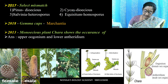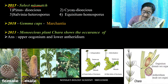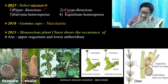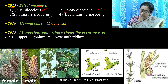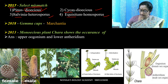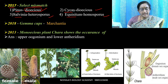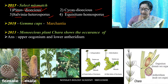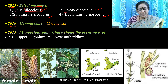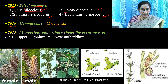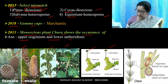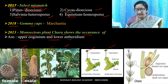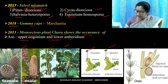An example question: Select the mismatch — Pinus is dioecious, Cycas is dioecious, Salvinia is heterosporous, Equisetum is homosporous. Pinus is actually a monoecious plant, so that is the mismatch. Cycas dioecious is correct. Salvinia is a pteridophyte which is heterosporous in nature. In 2018, we got a question related to Marchantia gemmae cups, which are asexually reproducing structures in Marchantia. Marchantia has separate male and female thalli, and Chara is a monoecious plant.